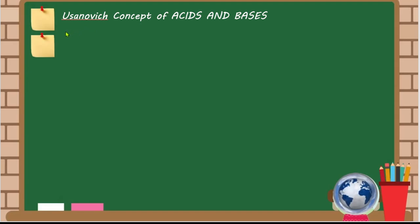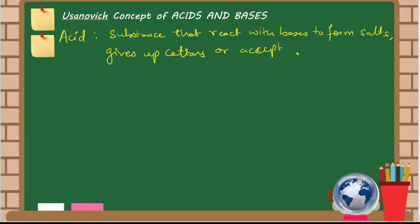Now, what is the concept? What is an acid? It is a substance that reacts with bases to form salts. The acid gives up cations and it will accept anions and electrons.